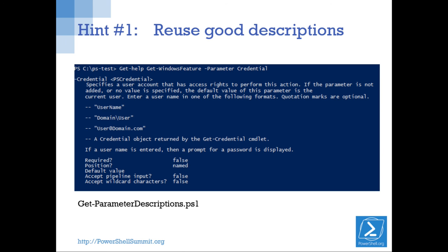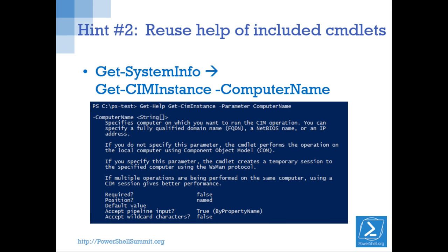Here's a great hint: reuse good descriptions. If you're doing something like the Credential parameter — something that's used a lot — you don't need to write from scratch. Go find one that you like. This one comes from Get-WindowsFeature — I didn't write it but it's my very favorite. It's very clear, explains how the Credential parameter works and all the different values you can use. If inside your function you're calling Get-WMIObject or Get-CimInstance and you're just passing the ComputerName parameter to the next cmdlet, go grab its ComputerName parameter description — no need to rewrite it.